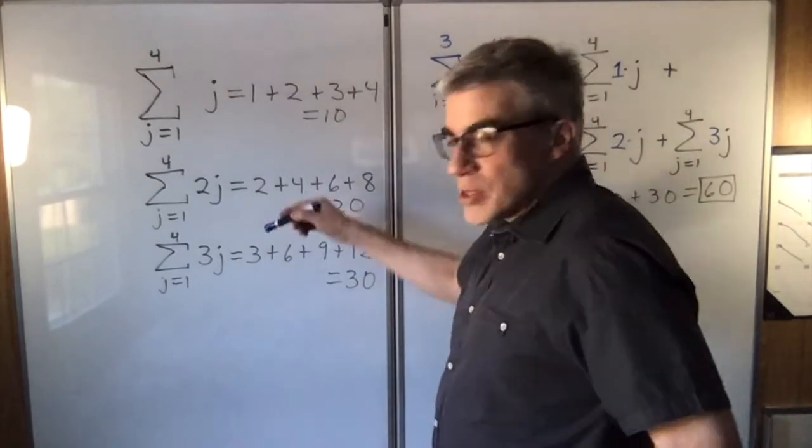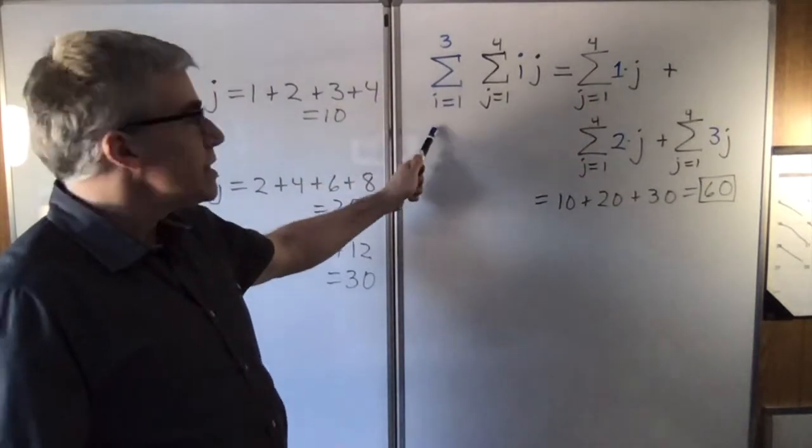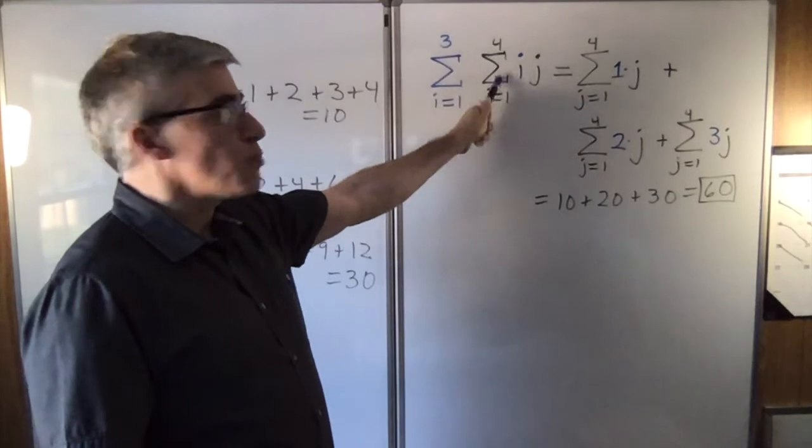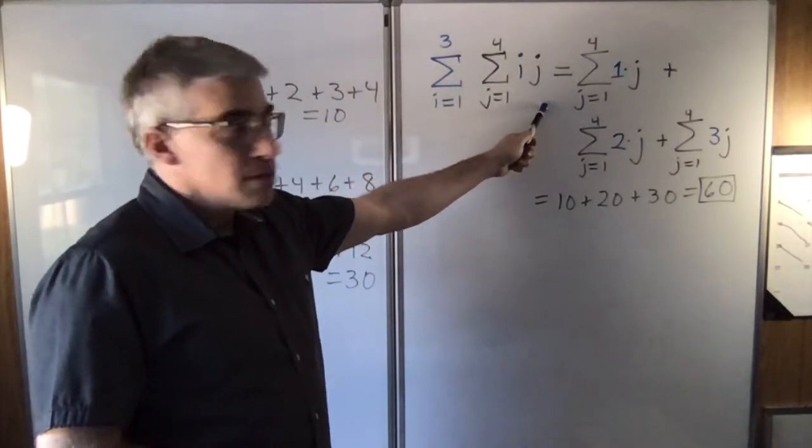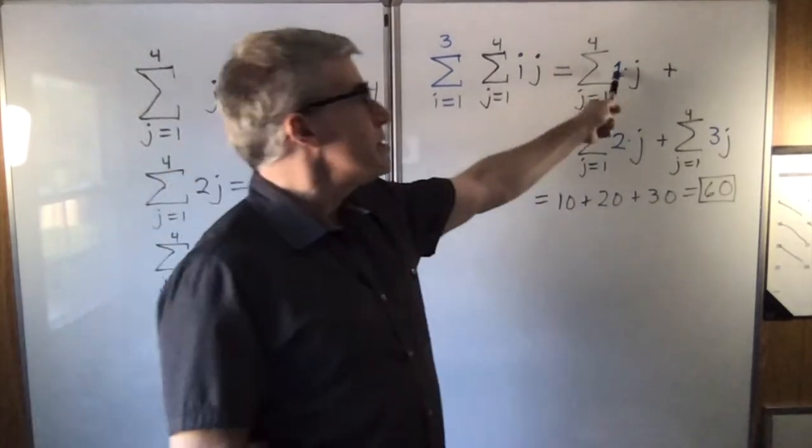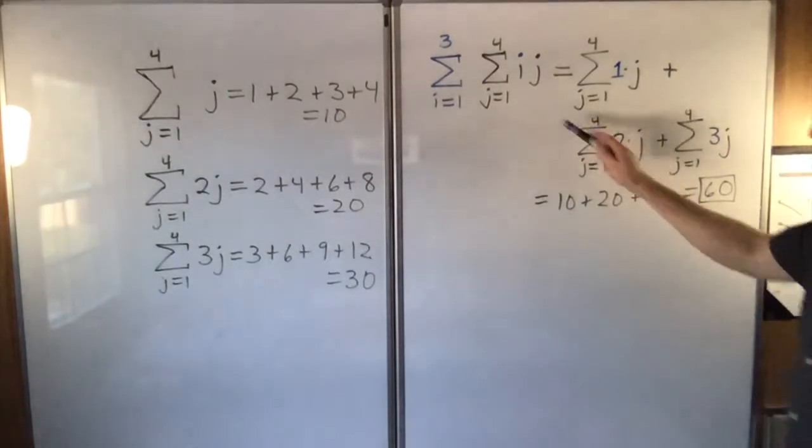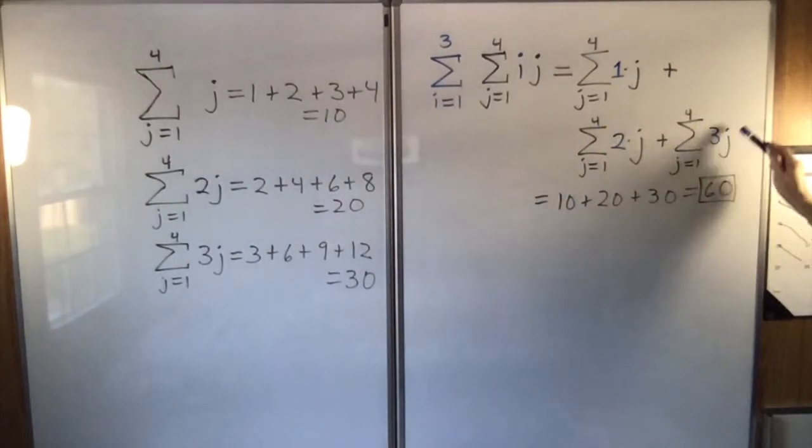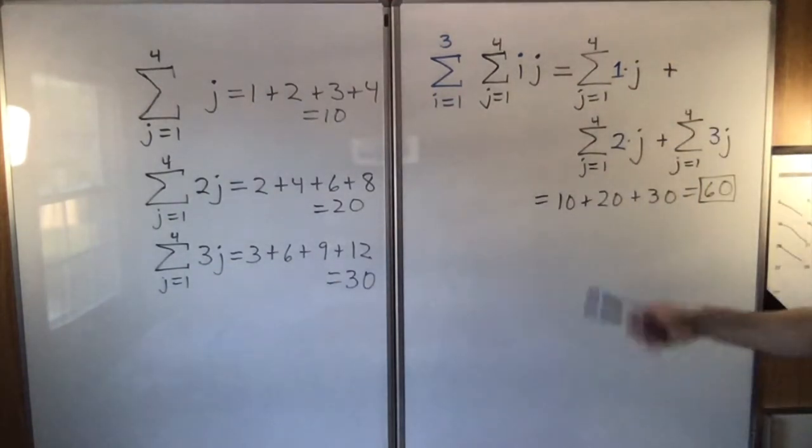Instead of doing those separately, you can write a double sum. The sum from i equals 1 to 3 of the sum from j equals 1 to 4 of i times j. So first you say i is 1, and you get the first sum. Then you say i is 2, and you get the second sum. And you say i is 3, and you get the third sum, and you add up the sums. It is a sum of sums. So you get 10 plus 20 plus 30 is 60.